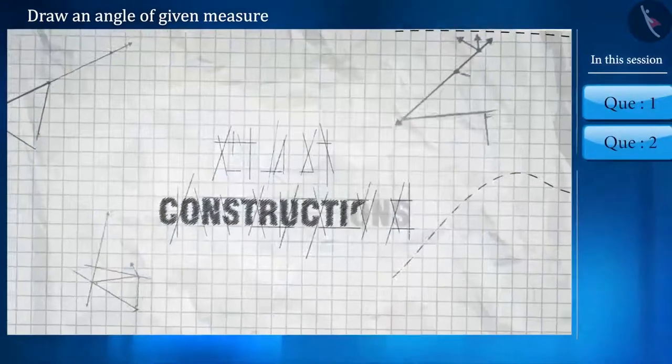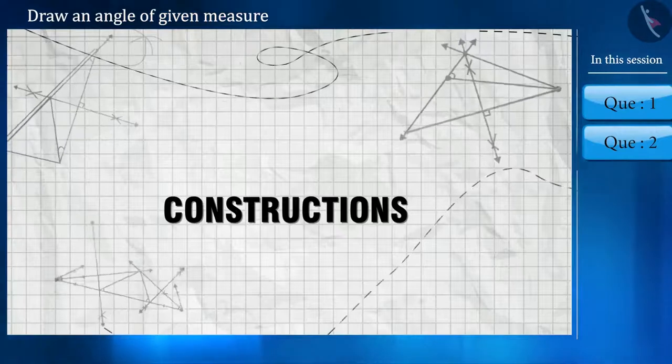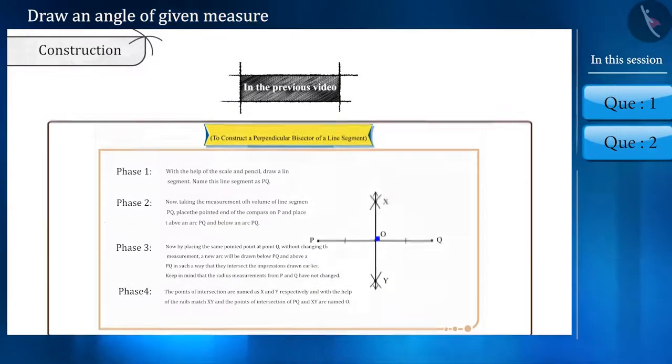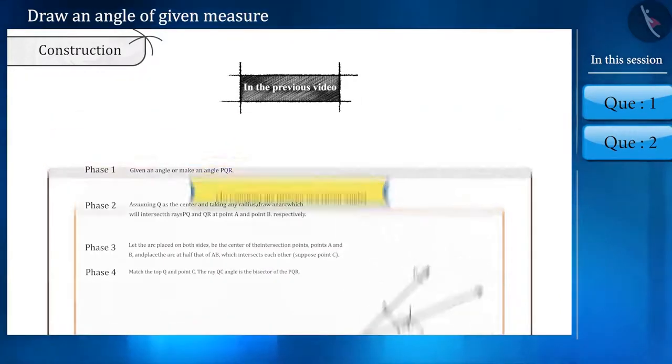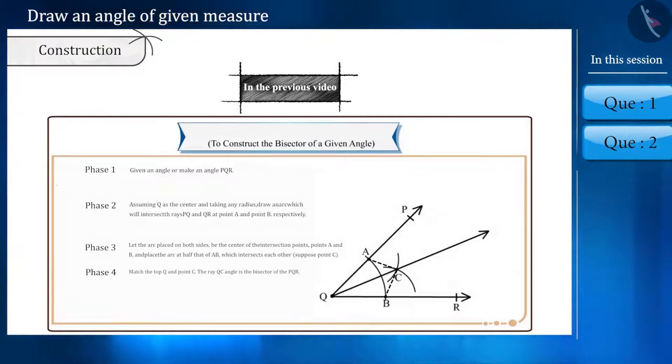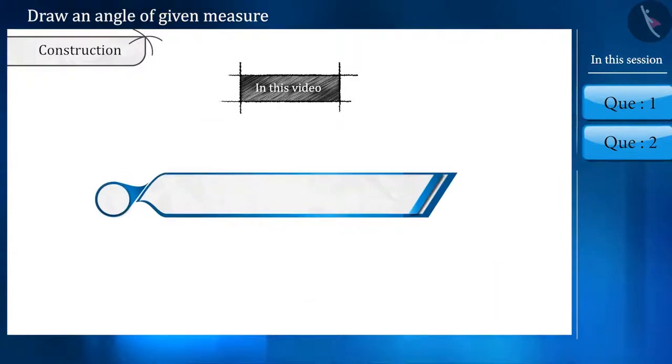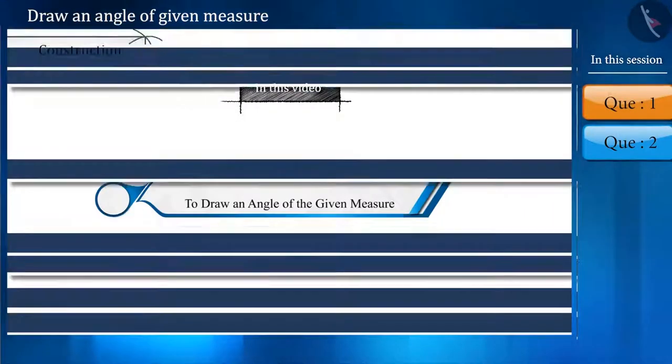Hello friends, you are welcome to this session on constructions. In the previous video, we learned basic construction of perpendicular bisector of line segment and angle bisector, and we also proved the constructions to be geometrically correct. In this video, we are going to learn about how one can draw an angle of a given measurement. So let us begin.